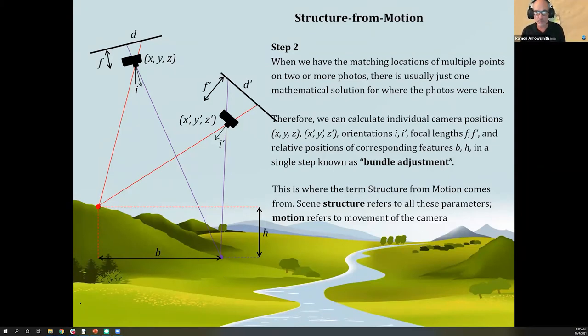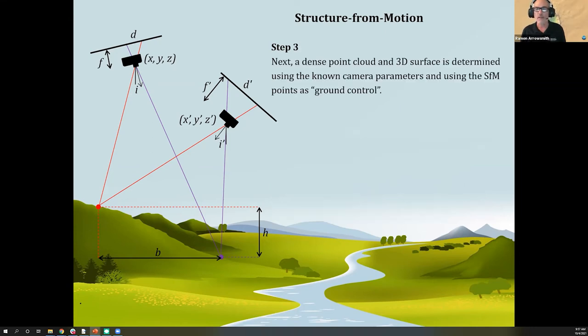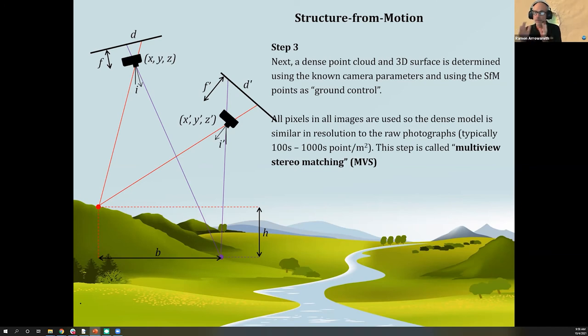The next step is to, given that information, compute a dense cloud, which basically fills in around all the sparse points. The dense cloud and 3D surface can be determined using the camera parameters and SFM as the ground control. All the pixels are used in all the images, so we can densify very much our data. We use something called multi-view stereo matching. It's not exactly structure from motion, but it needs that information about the camera positions and camera information to fill in.